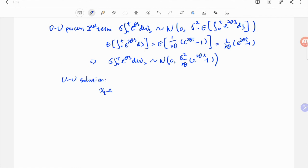Here we can rewrite the second term following convention, where w with subscript e to the 2 theta t minus 1 follows normal distribution with variance e to the 2 theta t minus 1.